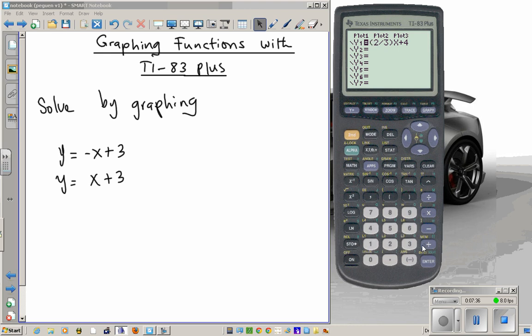So we're gonna enter negative X plus 3, and then the next one is just X plus 3. Alright, we got both of them. There goes the first graph, the negative slope, and then the second graph, the positive slope. What's the value of that intersection right there? Looks like 0, 3, but I'm not sure. To get the precise answer, we can use this button, which is calculate. This accesses the calculation functions for your graphing.